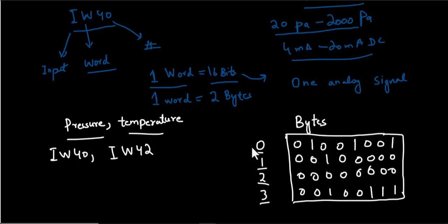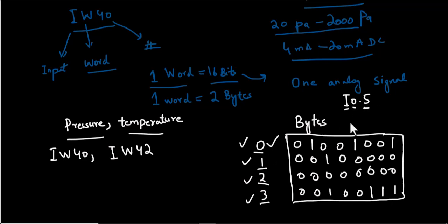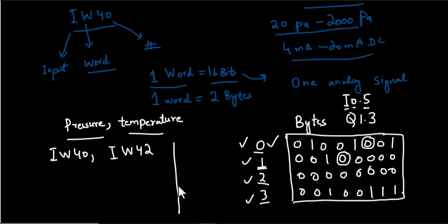When we address our digital input signals we do something like I0.5 — in this case I means input, 0 is the 0th byte, and 5 is the sixth bit. For output, we address like Q1.3, where this is byte one, bit 3.